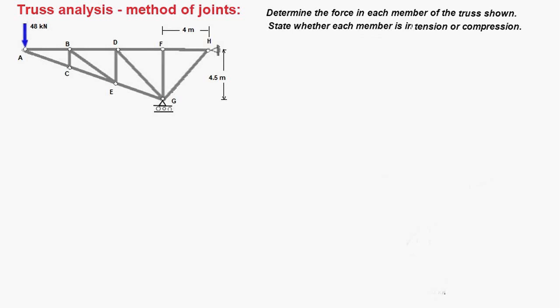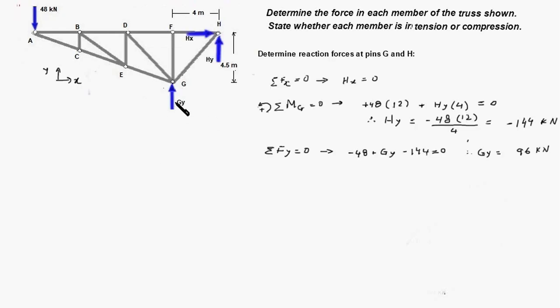So the first step is to draw a free body diagram of the entire truss to compute the reaction forces at pins G and H. The roller support at G gets replaced by a vertical force GY and a pin support at H gets replaced by a horizontal component HX and a vertical component HY. So first we have to determine these three reaction forces.